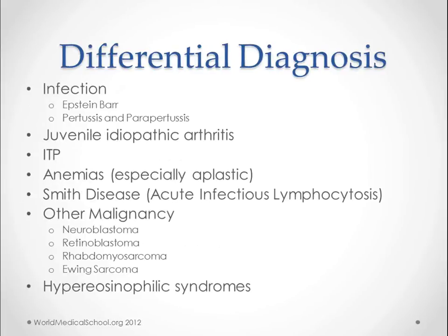In your differential diagnosis, if we're talking about fever and lymphadenopathy, any infection can cause those things. But these symptoms are persisting for a longer time than a normal viral infection. Epstein-Barr and pertussis are examples of infections that can last over a longer time and may look a little bit like this. With any fever and lymphadenopathy, you want to make sure it's clearing up.